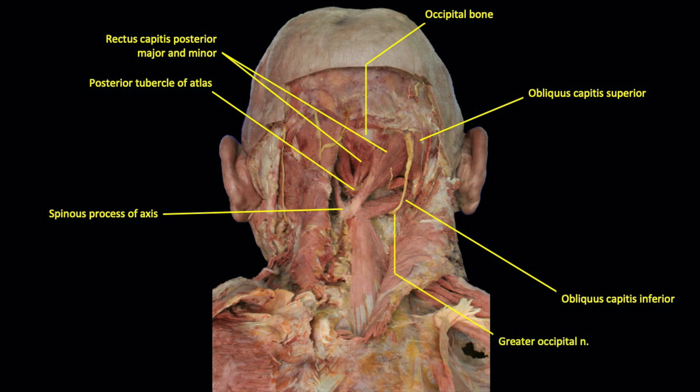Now, the important relationship of the greater occipital nerve, as it turns superiorly just inferior to the obliquus capitis inferior, is noted. If the nerve was originally damaged while trying to clean the tough superficial fascia and ligamentum nuchae, it will generally be found at this location by continuing to dissect and searching for the nerve.